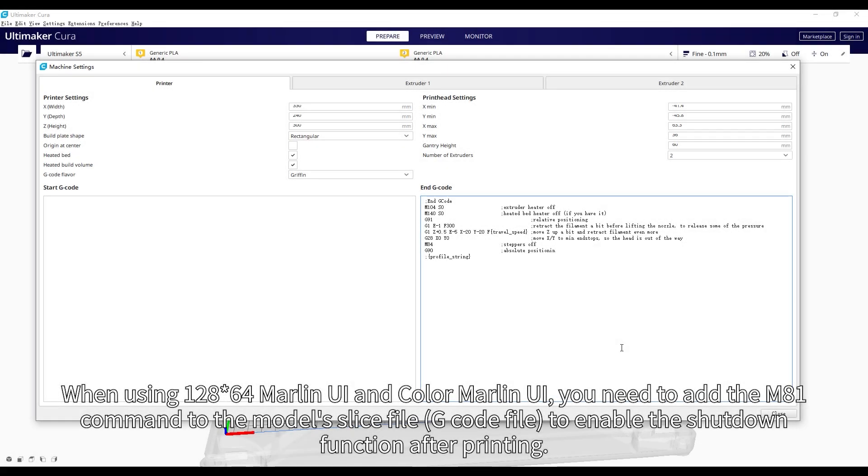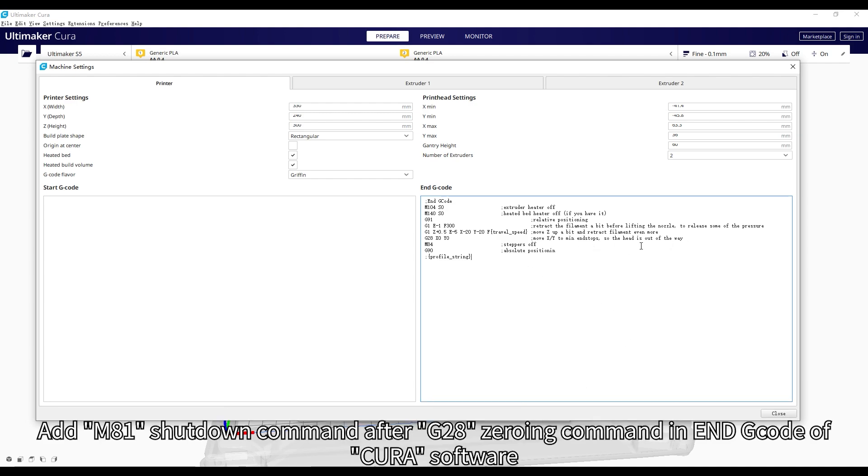When using 128x64 Marlin UI and color Marlin UI, you need to add the M81 command to the model slice file G-code to enable the shutdown function after printing. Add M81 shutdown command after G-280 end command in G-code of Cura software.